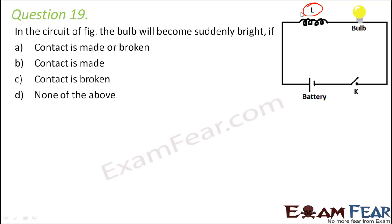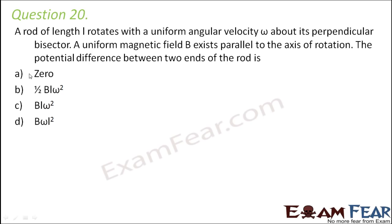Now, the moment you break the contact — after the contact was made — earlier only the main current was flowing, but now the self-induced current also flows in the circuit. Because of that additional self-induced current, the bulb becomes suddenly very bright for that moment. It won't stay bright forever, just at the instant the contact is broken. So the correct option is C.